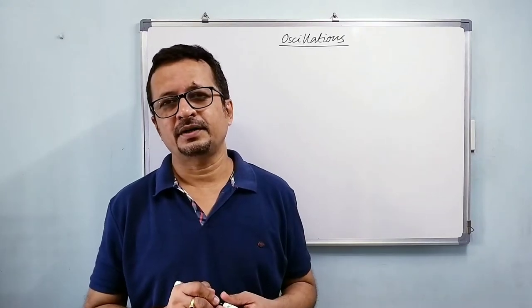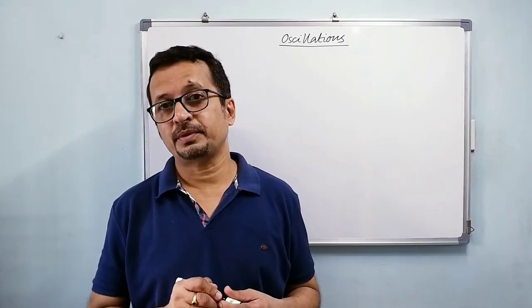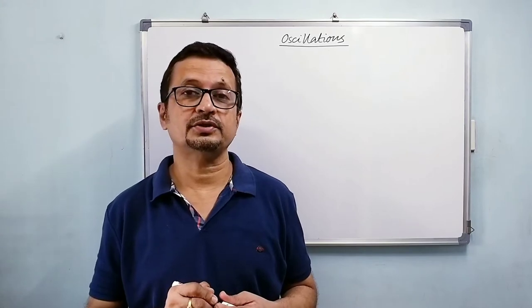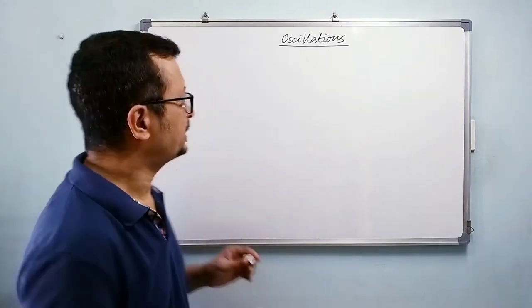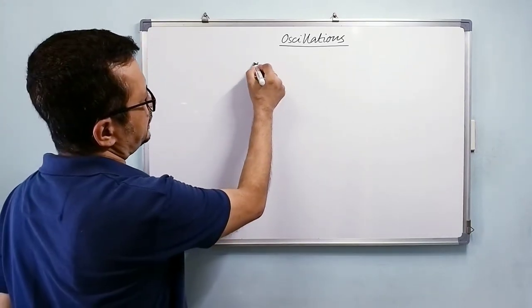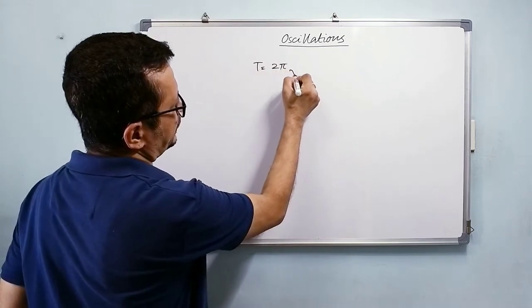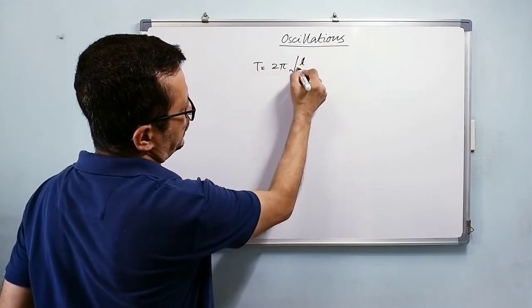Welcome back guys. In the last video we have seen simple pendulum, we figured out what was the time period of simple pendulum, and we found that T is equal to 2π√(L/g).